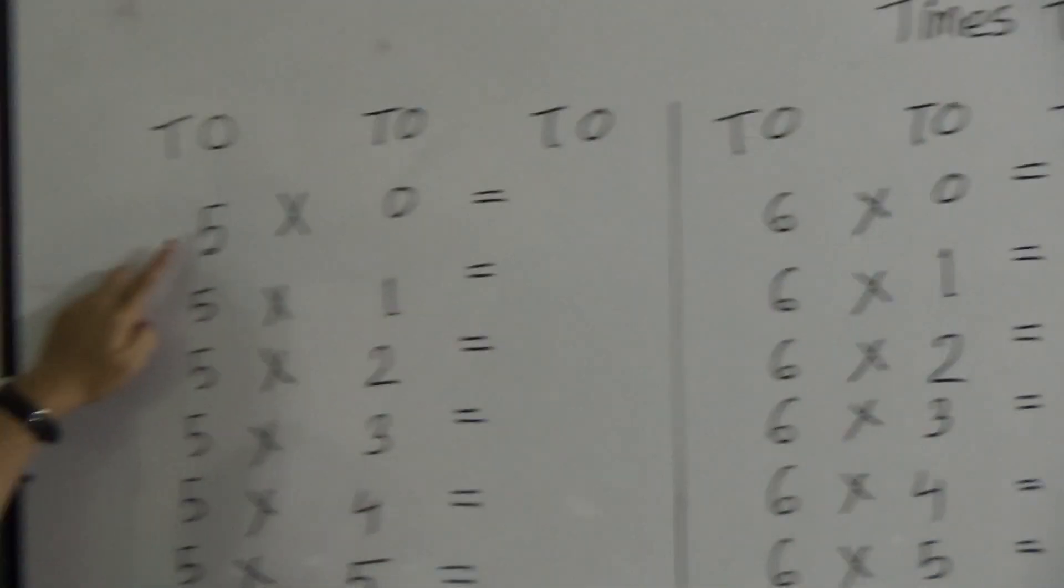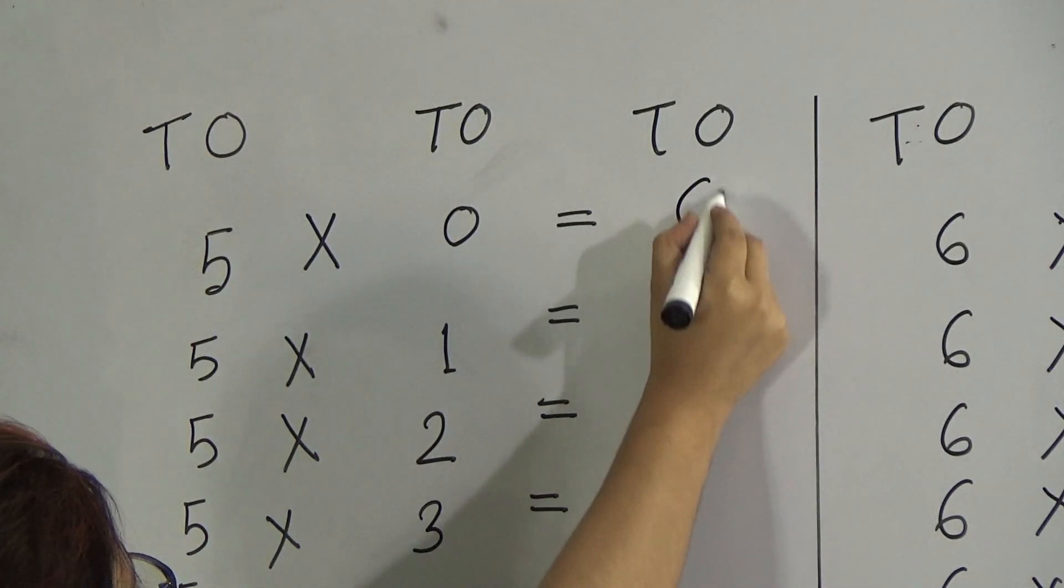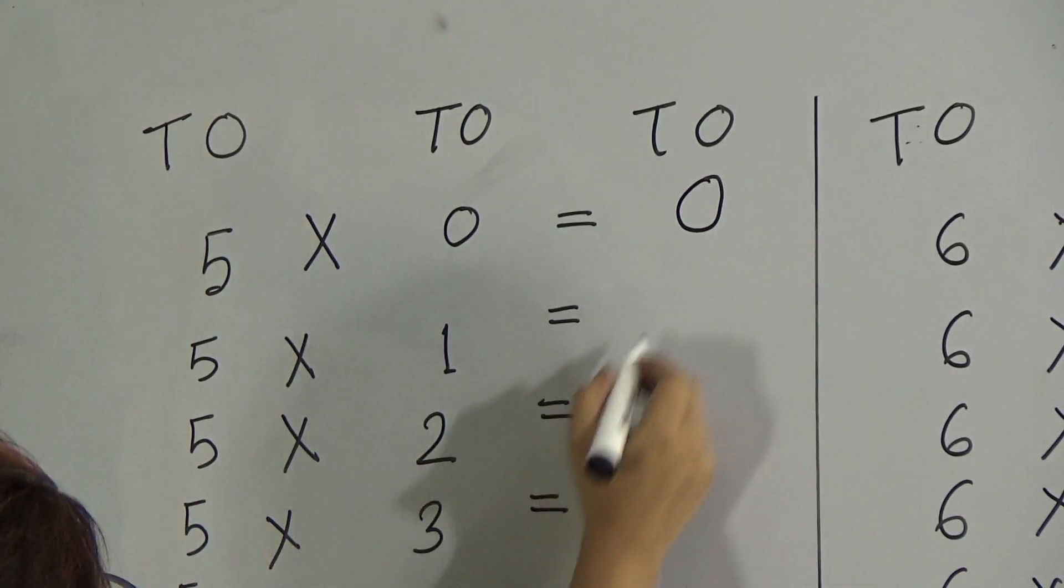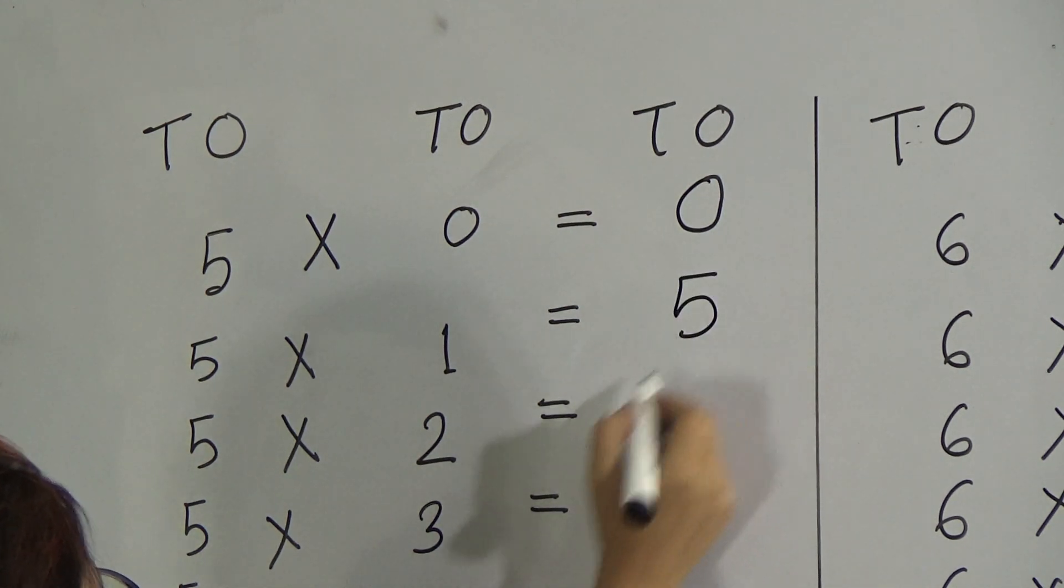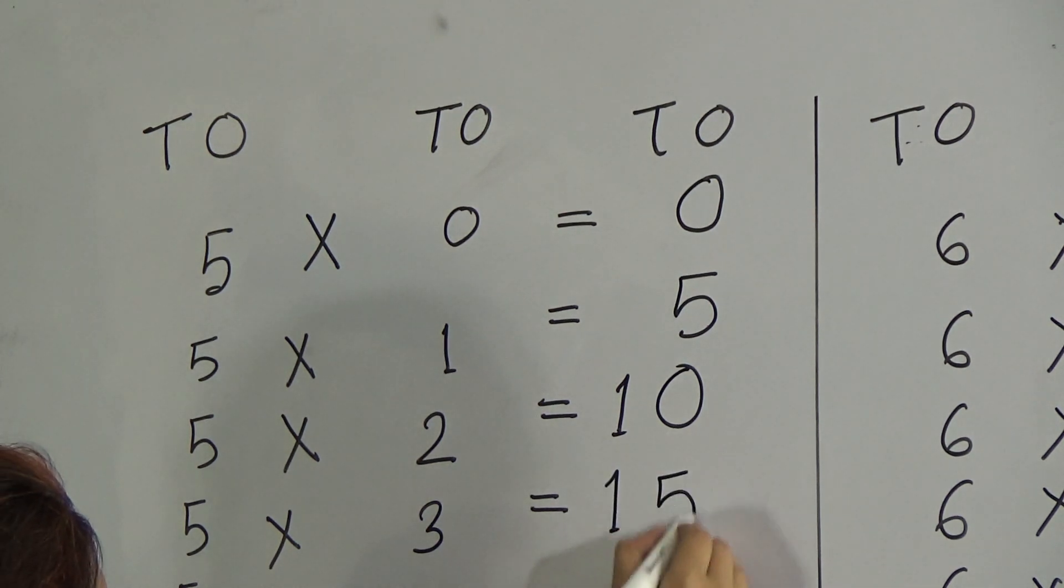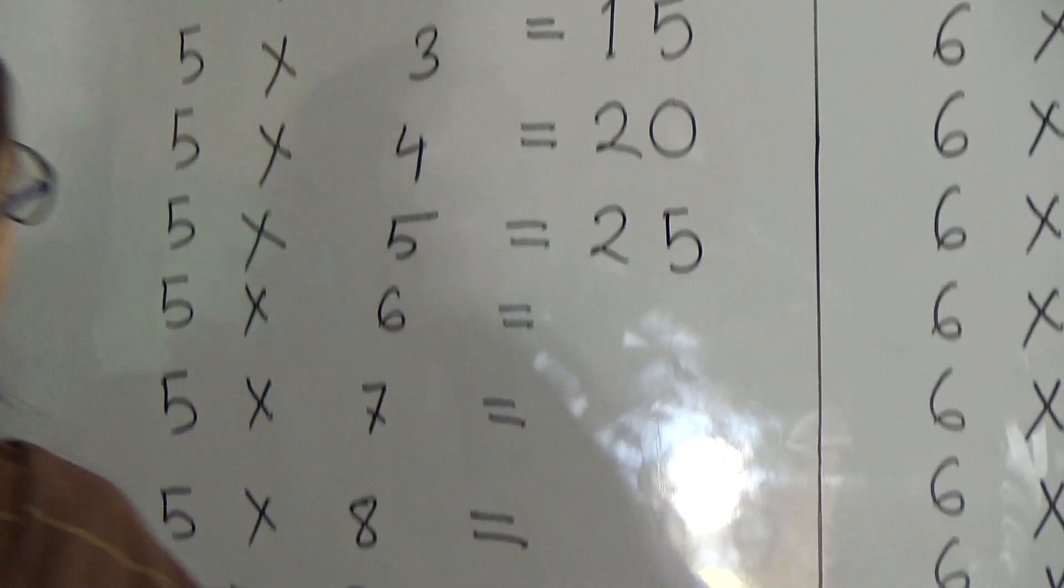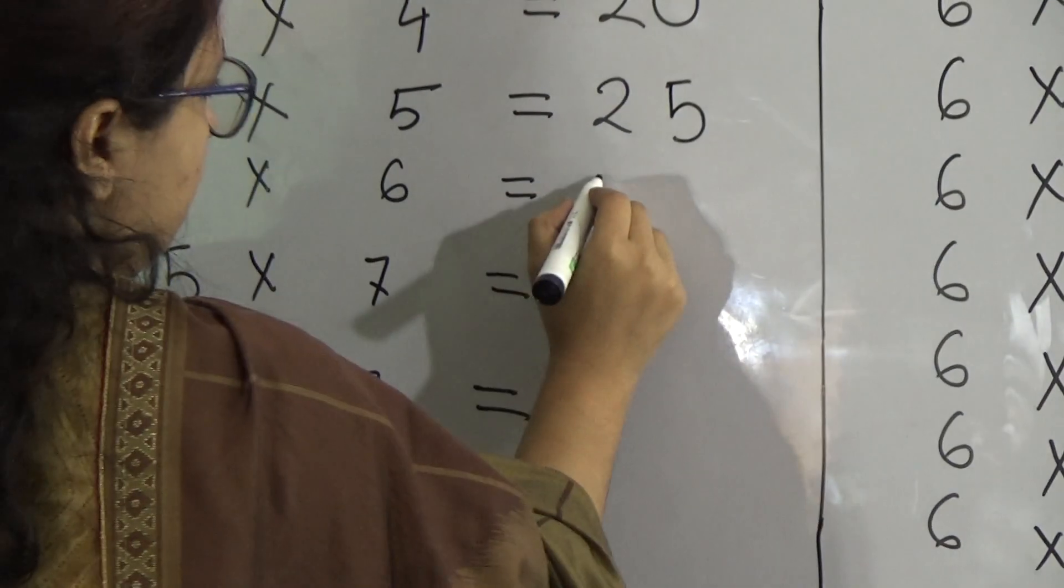Times table of 5. 5 times 0 is 0. 5 times 1 is 5. 5 times 2 is 10. 5 times 3 is 15. 5 times 4 is 20. 5 times 5 is 25. 5 times 6 is 30.